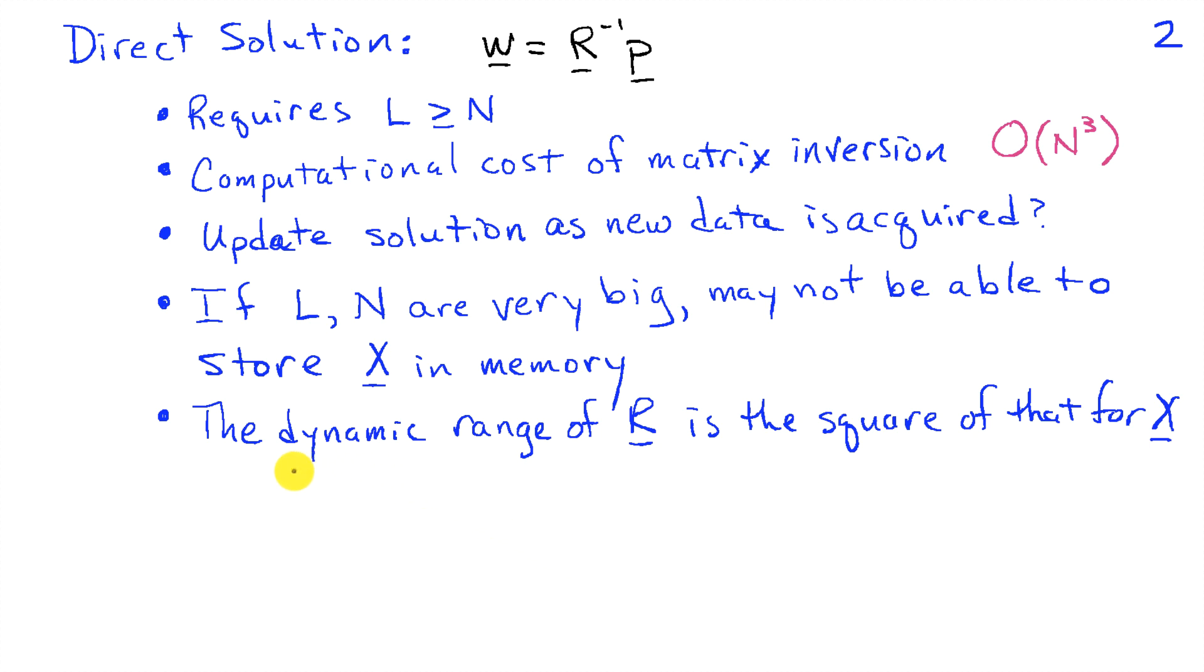Another challenge with the normal equation approach is that if I look at the dynamic range, in other words, the largest component relative to the smallest component of R, that's the square of the dynamic range for X. Multiplying X times X transpose ends up squaring the dynamic range, and that can be a problem. If there's a very large ratio of the largest to smallest component in X, we square that ratio in R. So suppose that ratio is 10 to the 10th in X, then it's 10 to the 20th in R, and that leads to numerical difficulties with calculations.